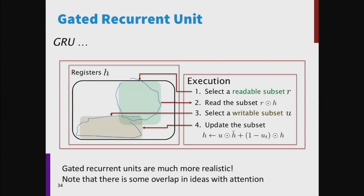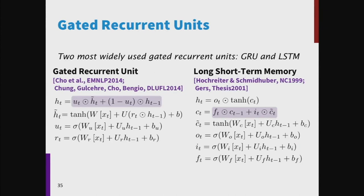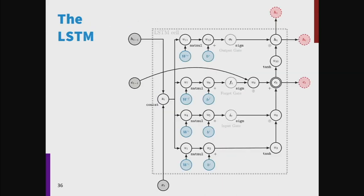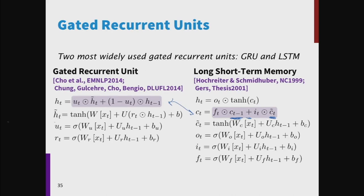Precisely what a gated recurrent unit does is say: maybe we can have a slightly more sophisticated little baby computer. Instead, we could select a subset of the registers we want to read — the reset gate controls that. It then computes a new value based on just those stored registers. And then the update gate, which is also adaptive, can say: I want to write some registers, but the rest of the registers will just keep their previous value. That seems a useful idea to have in a computer. This is the GRU model that Abby presented.